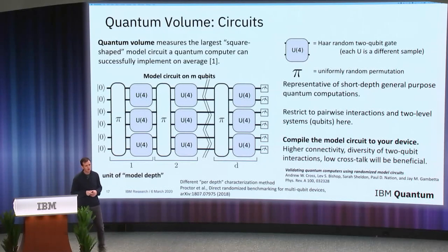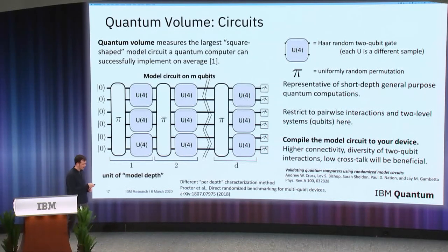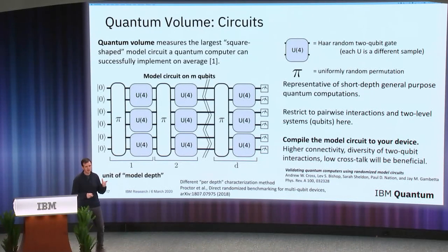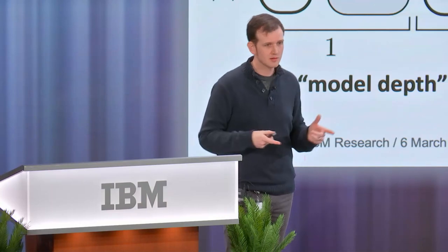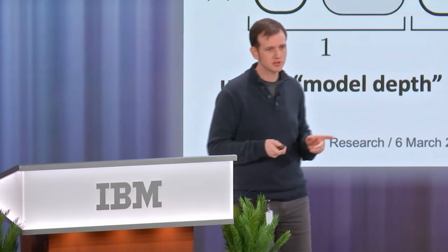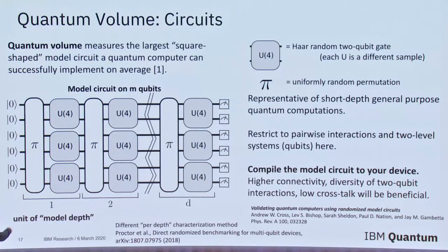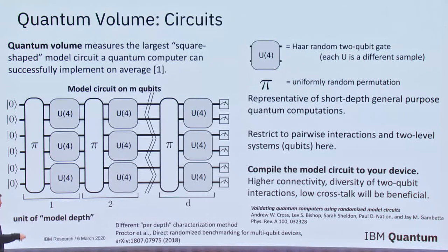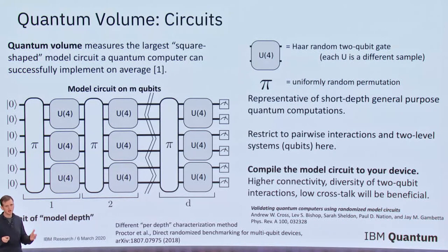What is quantum volume? Quantum volume is a procedure to measure the largest effective square circuit that you can run. The algorithm splits into layers where each layer consists of a completely random SU(4) gate — a completely general and random two-qubit gate between a random set of two qubits, irrespective of the topology of the device. These are random permutations, so think of this as a random SU(4) between a random pair of qubits at each depth slice. You get a full n-qubit unitary, and then you compile that model circuit to your device based on your device topology.